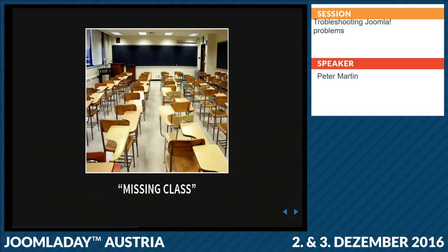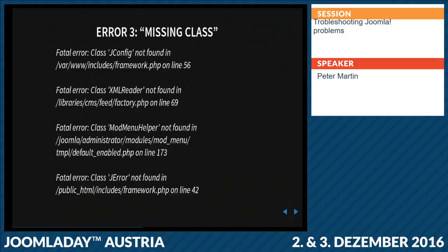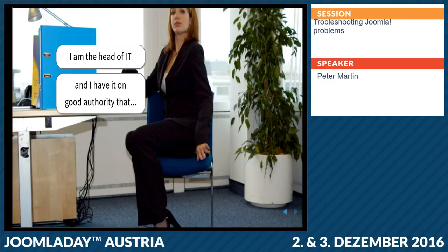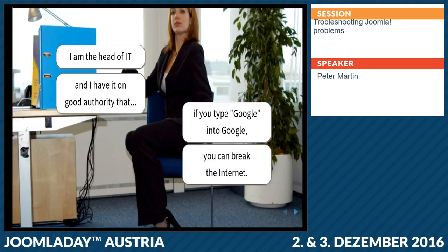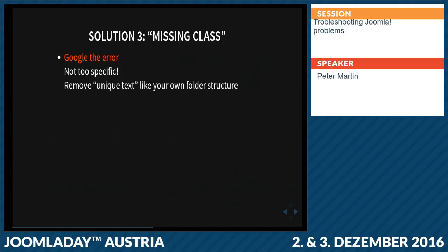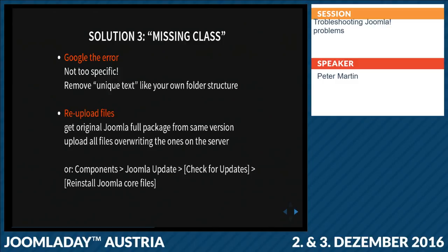Problem three is the missing class. When you have missing class problems, I recommend first going to Google and searching for the error — but not too specifically. Remove the part that gives information specific to your server path. You could also re-upload the Joomla files: download the zip file, unzip it, and upload everything except the /installation folder. Or use Joomla's new feature under Component > Joomla Update to reinstall the Joomla core files. If it's a third-party extension, reinstall the extension — but create a backup first.